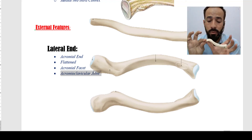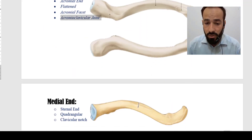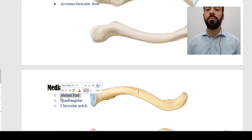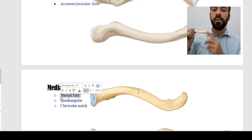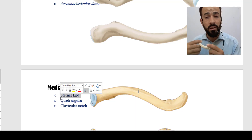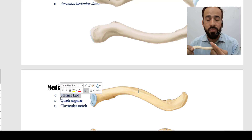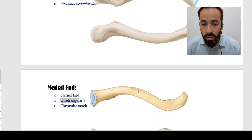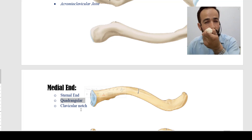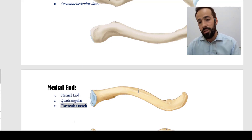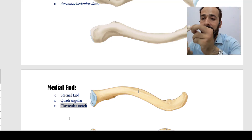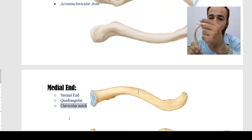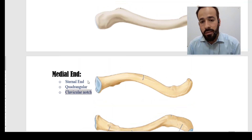The medial end of this bone is also known as the sternal end, because it makes a joint with the sternum — specifically with the manubrium of the sternum, which has a facet for it. So the clavicle has two ends: the acromial end and the sternal end. The sternal or medial end is quadrangular with four angles, and it also has a clavicular notch in it.